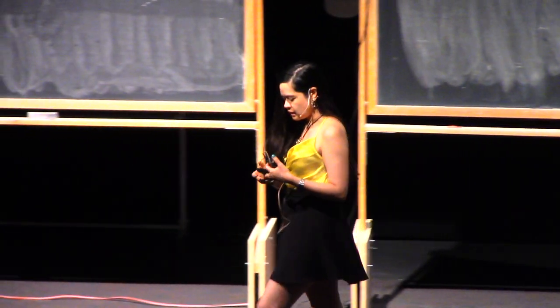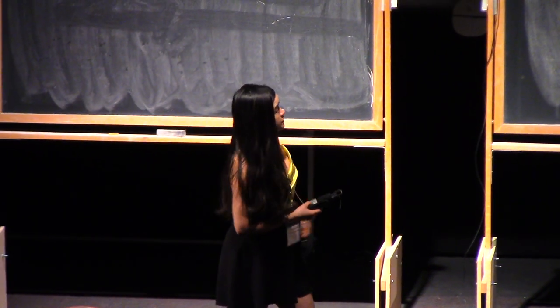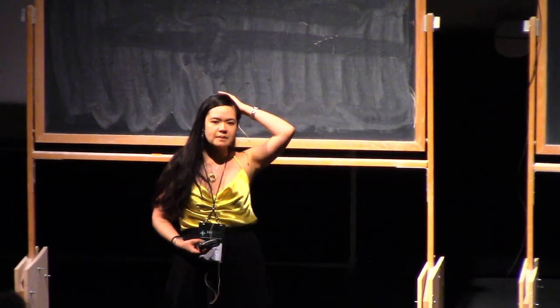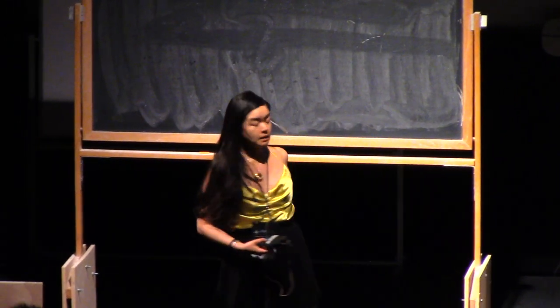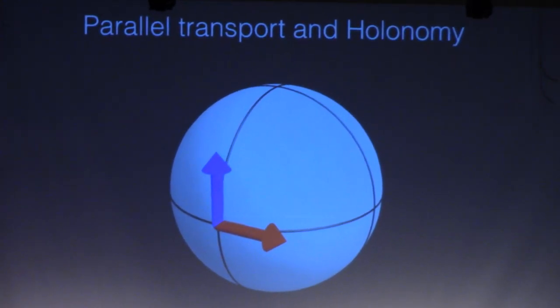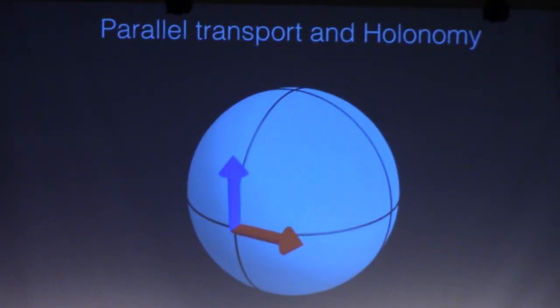What's going on is a phenomenon called holonomy. This is something we're familiar with if we think about the surface of a sphere. Imagine I'm standing at the equator, and my left hand is pointing along the red arrow to the east, and my right arm is pointing along the blue arrow to the north. Instead of actually turning, I'm gonna always face in the same direction.